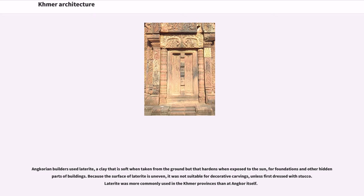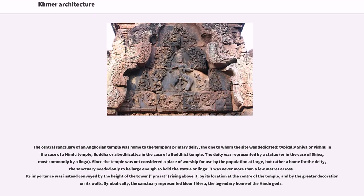Laterite was more commonly used in the Khmer provinces than at Angkor itself. The central sanctuary of an Angkorian temple was home to the temple's primary deity — typically Shiva or Vishnu in the case of a Hindu temple, or Buddha or a Bodhisattva in the case of a Buddhist temple. The deity was represented by a statue, or in the case of Shiva, most commonly by a linga. Since the temple was considered a home for the deity rather than a place of worship for the general population, the sanctuary needed only to be large enough to hold the statue or linga — never more than a few meters across.